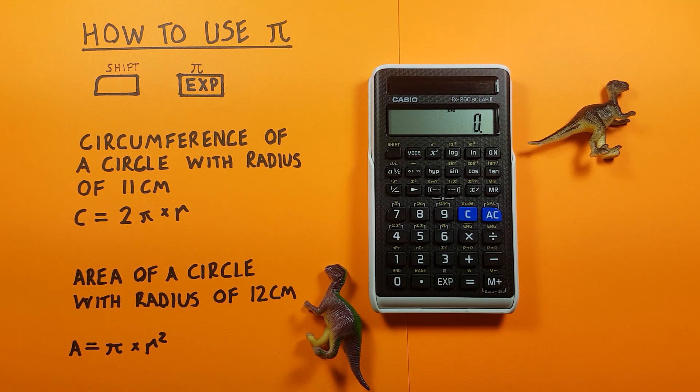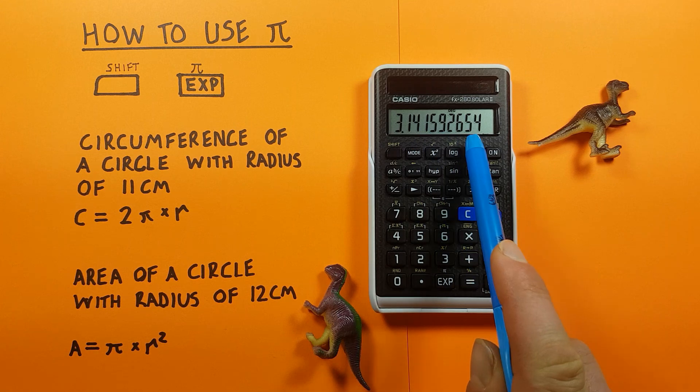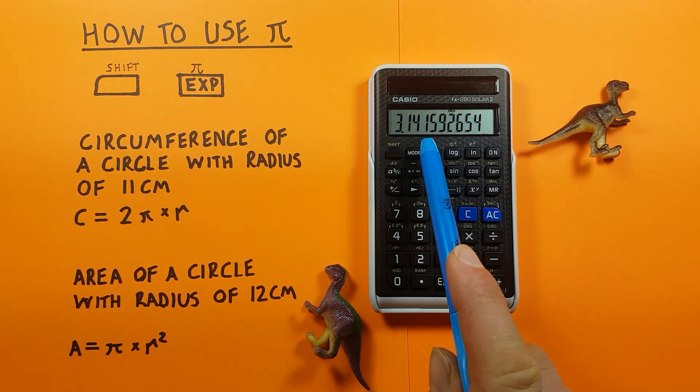When we want to enter Pi into our calculator or use it, what we have to do is press shift and then the exp key. The symbol for Pi doesn't appear but you do see the number on your screen.